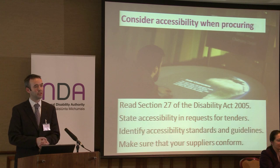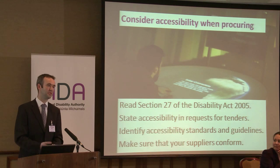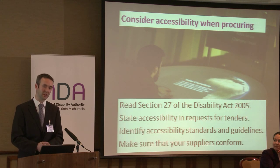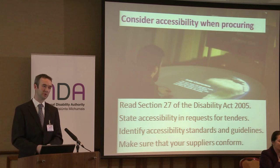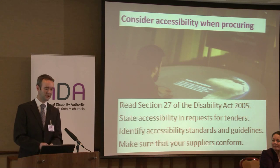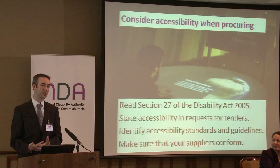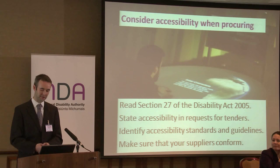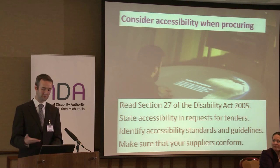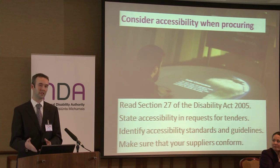The next thing is to consider accessibility when procuring. A lot of you here have probably sent out requests for tenders already. We like to see Section 27 of the Disability Act 2005 included — that says that when a public body procures any buildings, services, or goods, they have to make sure that they're accessible to people with disabilities. When you have a request for tender, you can state accessibility requirements. You can find out from our website and from the ICT Procurement Toolkit on the Centre for Excellence in Universal Design website which standards you should apply. There's probably a standard there already — you don't have to reinvent the wheel. And if necessary, if you don't have the expertise in-house, find somebody else who can help you check that the building or information will be fully accessible.